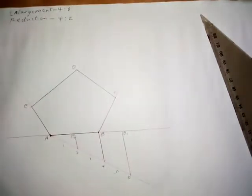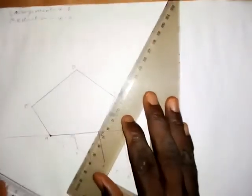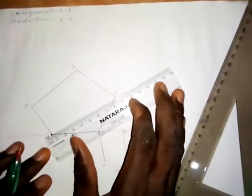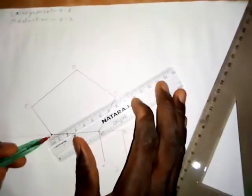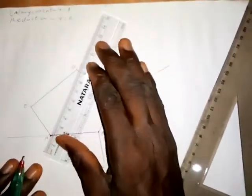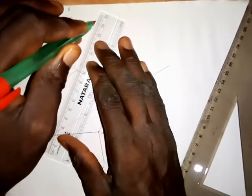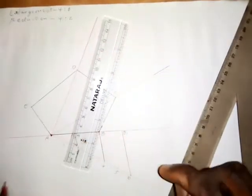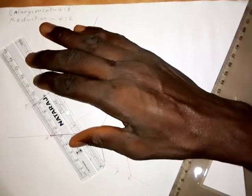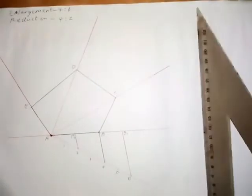Let's do the enlargement first. From point A, draw a radial line. Also from point A, draw a radial line passing through point D, as we have done that of point A passing through point C. Then also from point A, draw a radial line passing through point E.